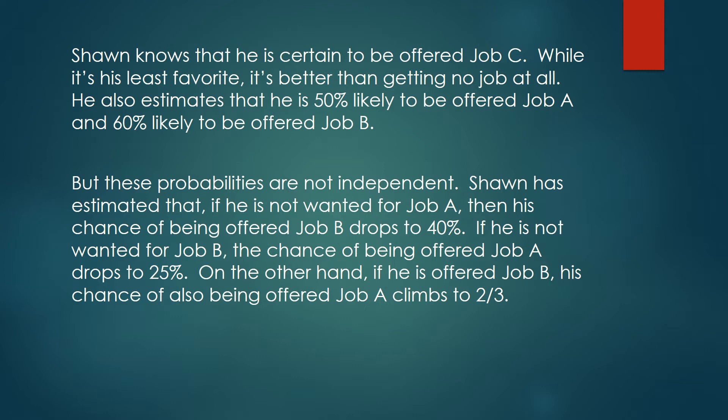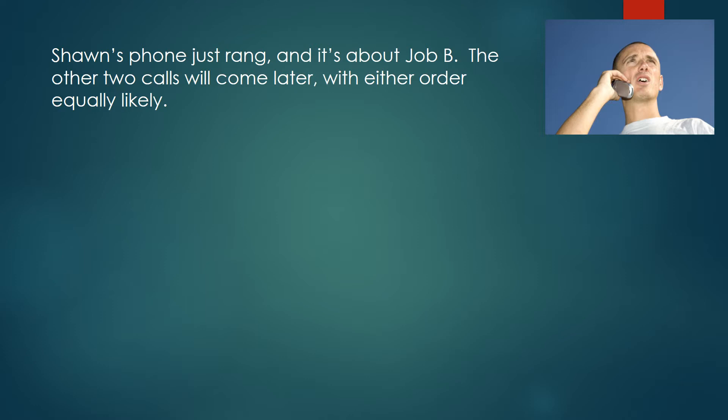But they're not independent. He's being compared to other people in the market after all, and so if he finds out that they don't want him for A, he's probably not the hot shot he thought he was. His chances of being offered job B will drop from 60% to 40%. In the same kind of way, if he's not wanted for job B, he figures his chances of being offered job A drops from 50% down to 25%. On the other hand, if he is offered job B, then his chance of also being offered job A climbs to two-thirds. Alright, Shawn's phone just rang and it's about job B. The other two calls will come in later and either order is equally likely. By the way, if you want some practice with this problem, it's interesting to roll back the parts of the tree where job A is the first one that calls or job C is the first one that calls. You can see whether it makes any difference to Shawn and which one he'd prefer. It's a good little exercise. But for today we're dealing with the situation that we have at hand, namely the phone just rang and it's about job B.